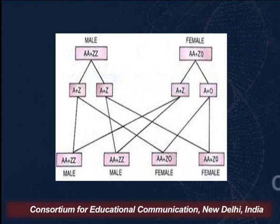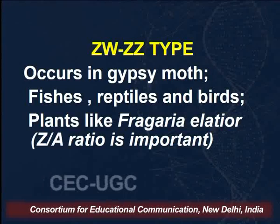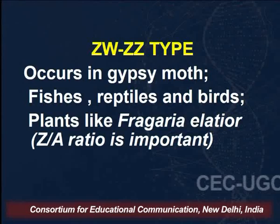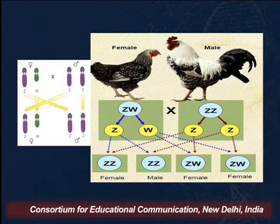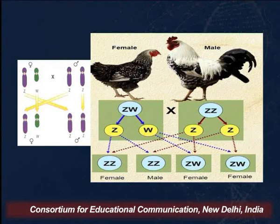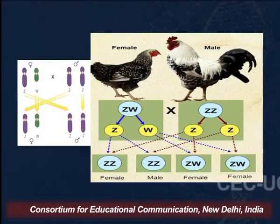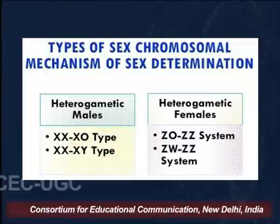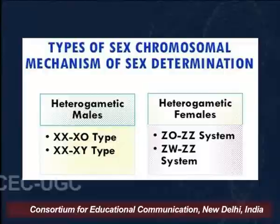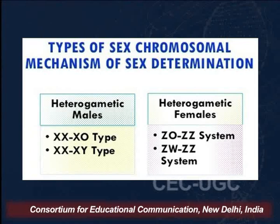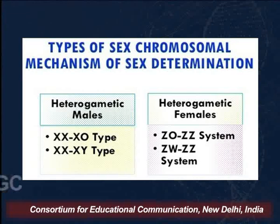In the ZW/ZZ type, which occurs in gypsy moth, reptiles, and birds — including chickens — males are ZZ and homogametic, while females are ZW and heterogametic, giving rise to ZZ males and ZW females in a 1:1 ratio. To summarize, the types of sex chromosomal mechanisms include two categories: heterogametic males and heterogametic females. This necessitated the change of symbols from X to Z and from Y to W.